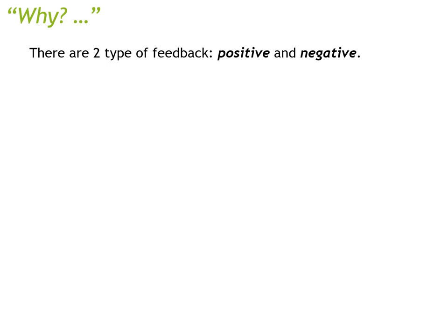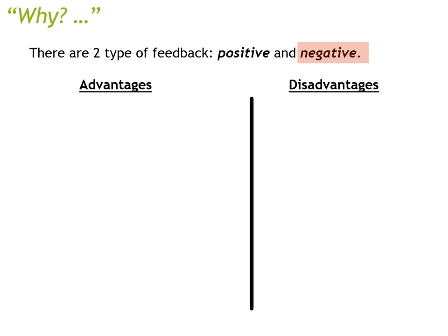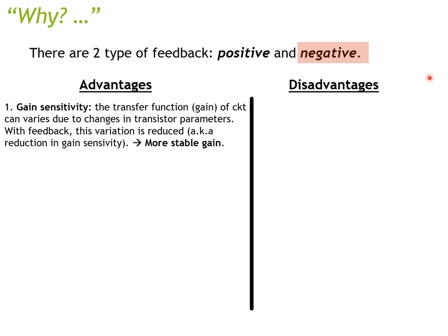There are two types of feedback systems — positive and negative — but in this lecture series we're going to focus mainly on the negative. Let's go over the advantages and disadvantages. There are a lot more advantages than disadvantages.